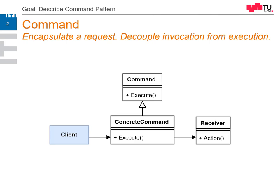A client calls the execute method of a concrete command, which is derived from the general command interface. This execute method does something — it contains a method which is executed in a context. The context is the receiver that executes some actions. The difference from the strategy pattern is that the command knows its context; it knows all the data it needs to be executed. The strategy only contains the behavior, whereas the command contains both the behavior and data.